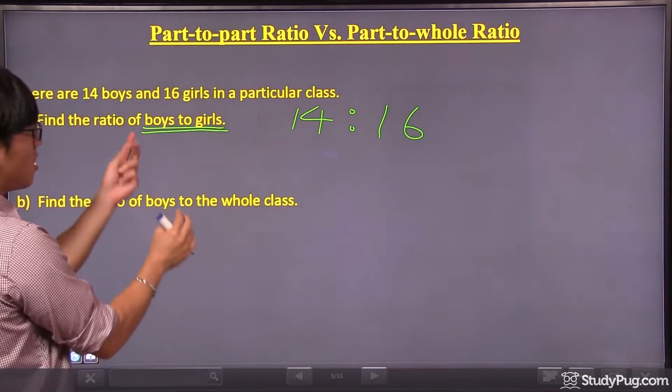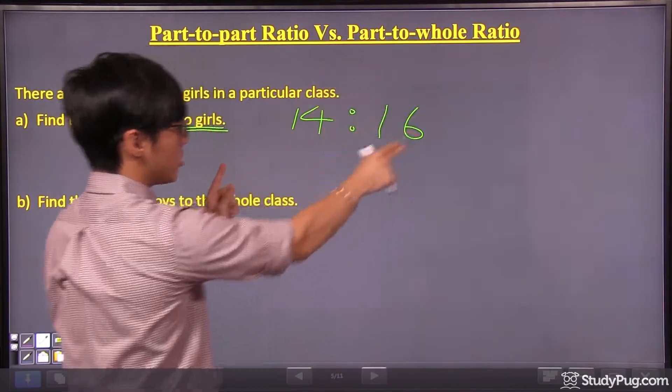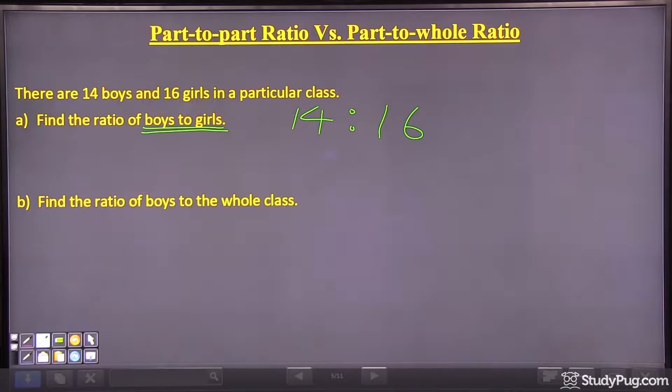So, the ratio of boys to girls, boys to girls, is just 14 to 16.